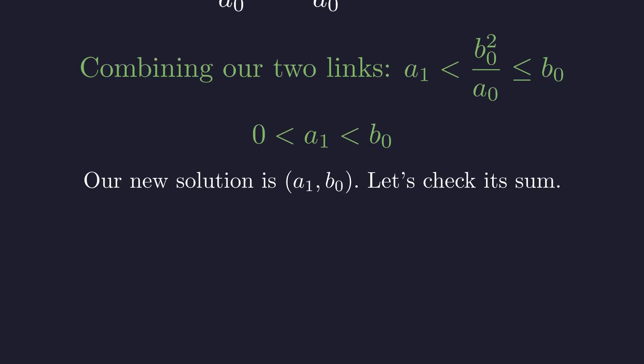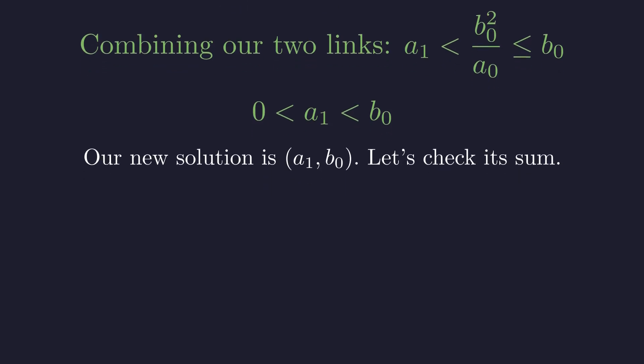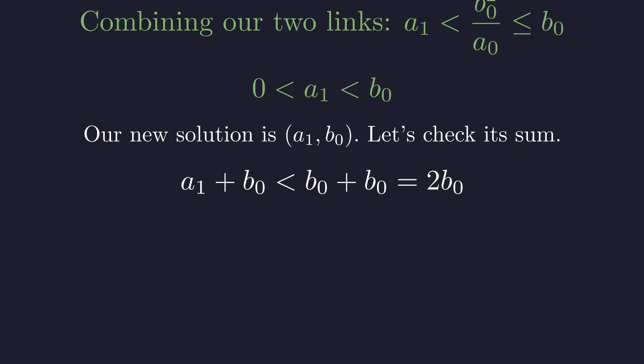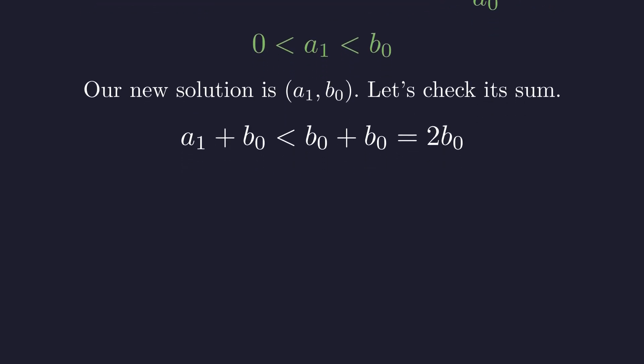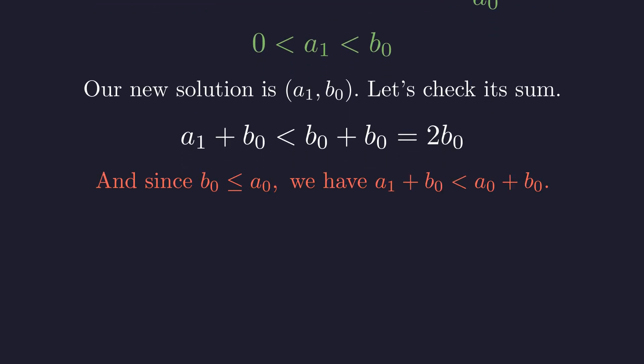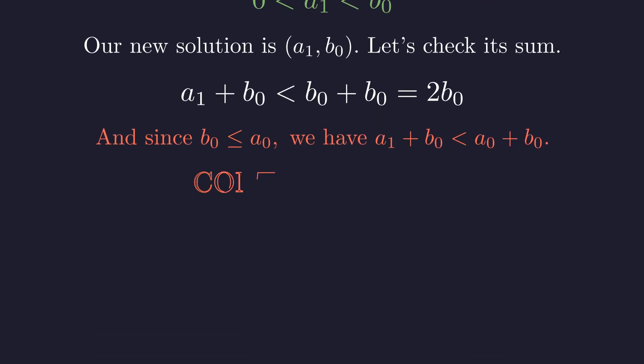So we have a new valid solution pair. Let's examine the sum of its components. Since a1 is less than b0, their sum is less than twice b0. More directly, since a1 is strictly less than a0, the new sum must be smaller than the original sum. This is our final contradiction. We started with the solution that had the smallest possible sum, yet we constructed another valid solution with an even smaller sum.